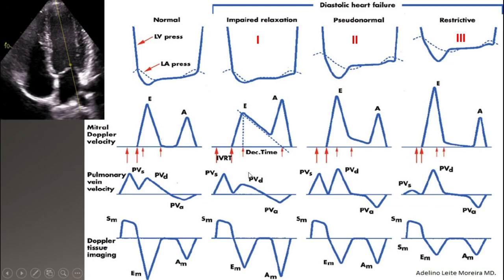In the early stage of diastolic dysfunction — impaired relaxation — since blood flow at early diastole decreases, blood flow from the pulmonary vein to the left atrium also decreases, corresponding with the D wave. We will see D become shorter. With worsening diastolic dysfunction and increasing left atrial pressure, when diastole starts, blood rushes very fast into the left ventricle. So the pressure in the left atrium drops suddenly, causing blood flow from the pulmonary vein to increase. D increases even more than normal and becomes higher than the S wave.